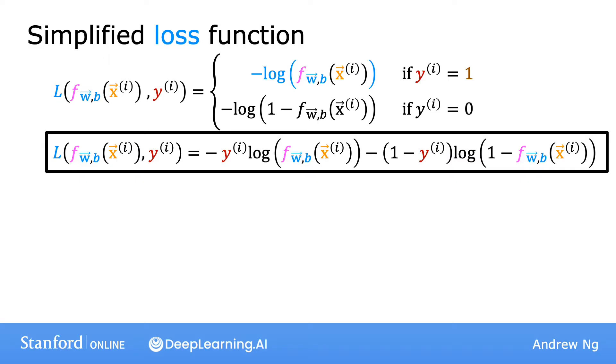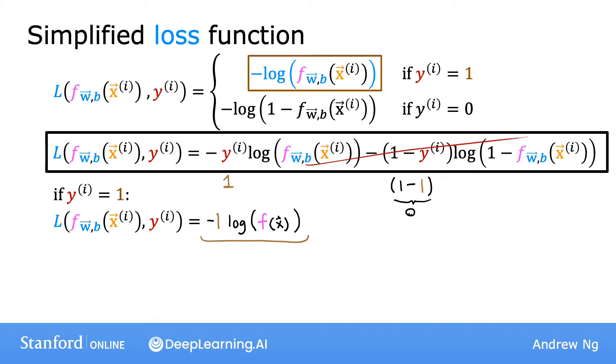Let's see why this is the case. Now remember, y can only take on the values of either 1 or 0. In the first case, let's say y equals 1. This first y over here is 1, and this 1 minus y is 1 minus 1, which is therefore equal to 0. And so the loss becomes negative 1 times log of f of x minus 0 times a bunch of stuff that becomes 0 and goes away. And so when y is equal to 1, the loss is indeed the first term on top, negative log of f of x.